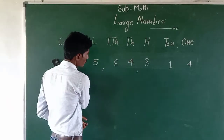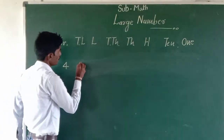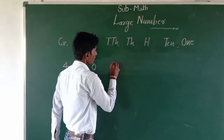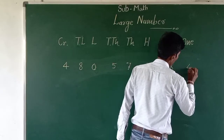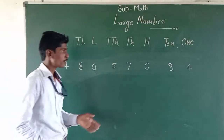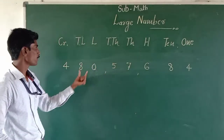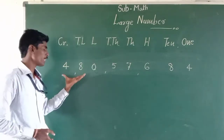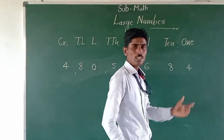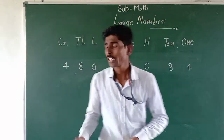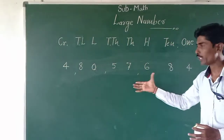We will take another example: the number 4, 8, 0, 5, 7, 6, 8, 4. Using the same procedure — ones, tens, hundreds, thousands, ten-thousands, lakhs, ten-lakhs, and crore — how do we call this number? It is 4 crore, 80,57,684. This is the procedure for how to call a number using digit places and the value of that number.